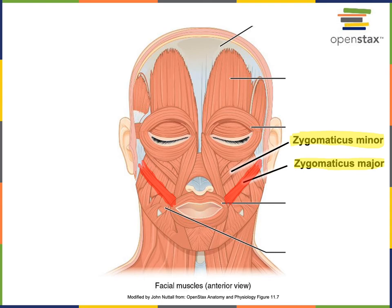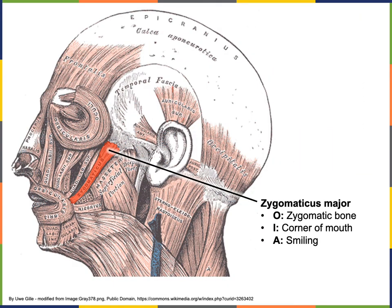These muscles are named after the zygomatic bone. The zygomaticus muscles connect from the zygomatic bone down to the lips, where they contribute to elevating the corners of the mouth to produce a smile. The origin of zygomaticus major is on the zygomatic bone, whereas the insertion — the mobile location that moves when this muscle contracts — is on the skin at the corner of the mouth.